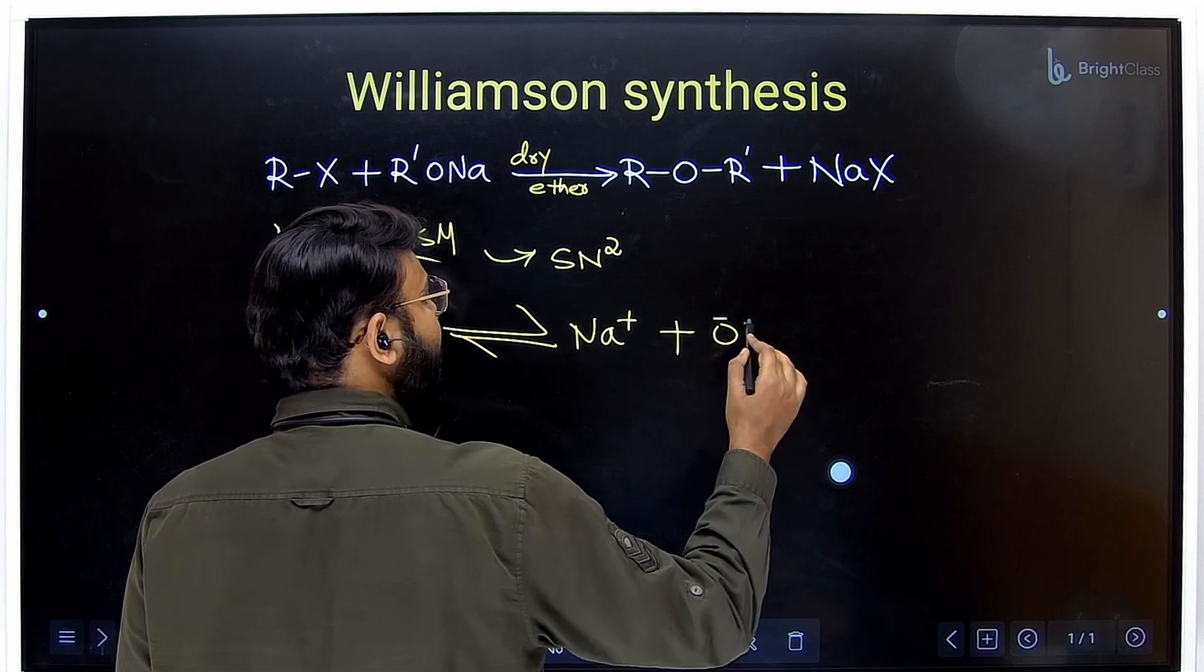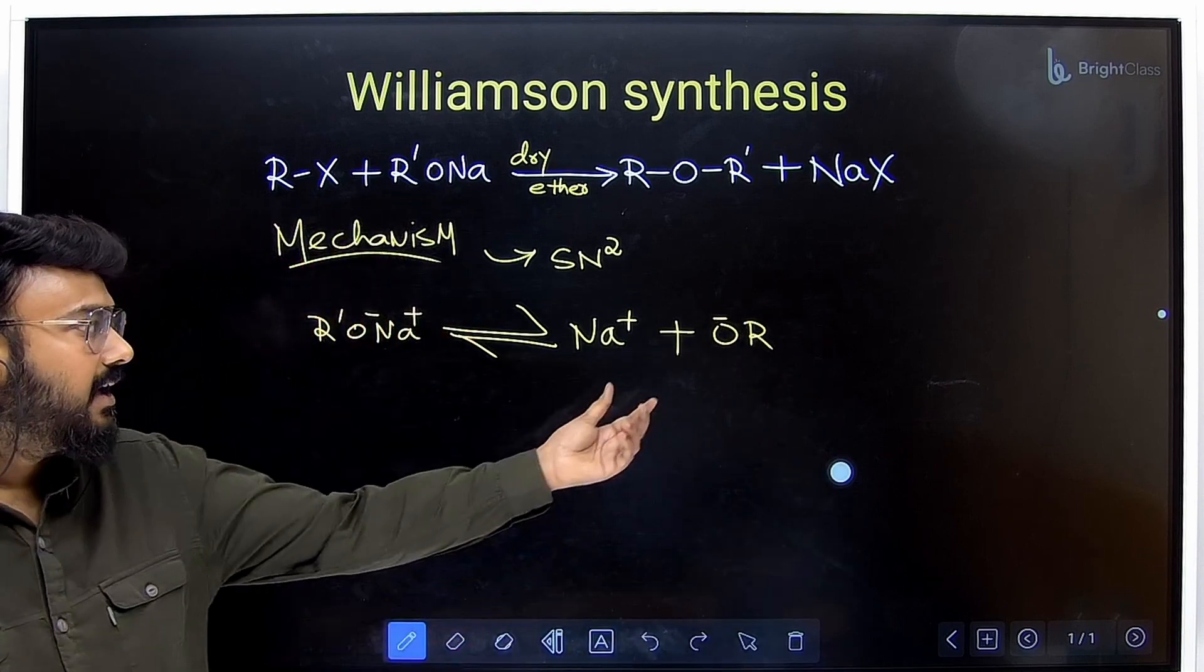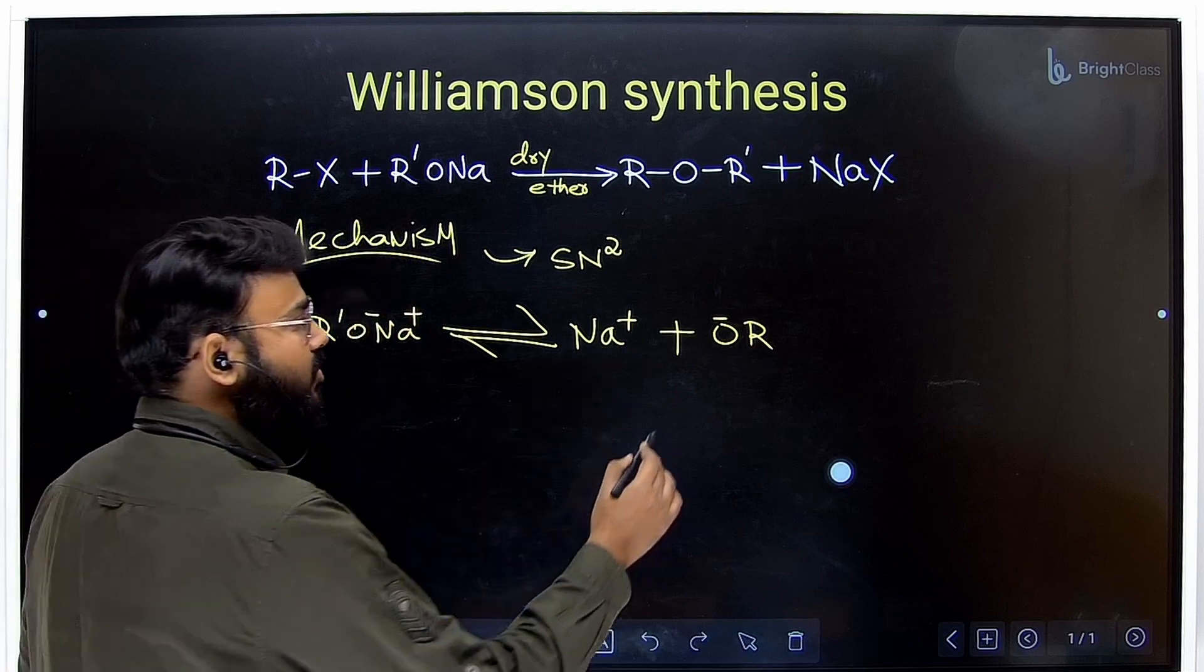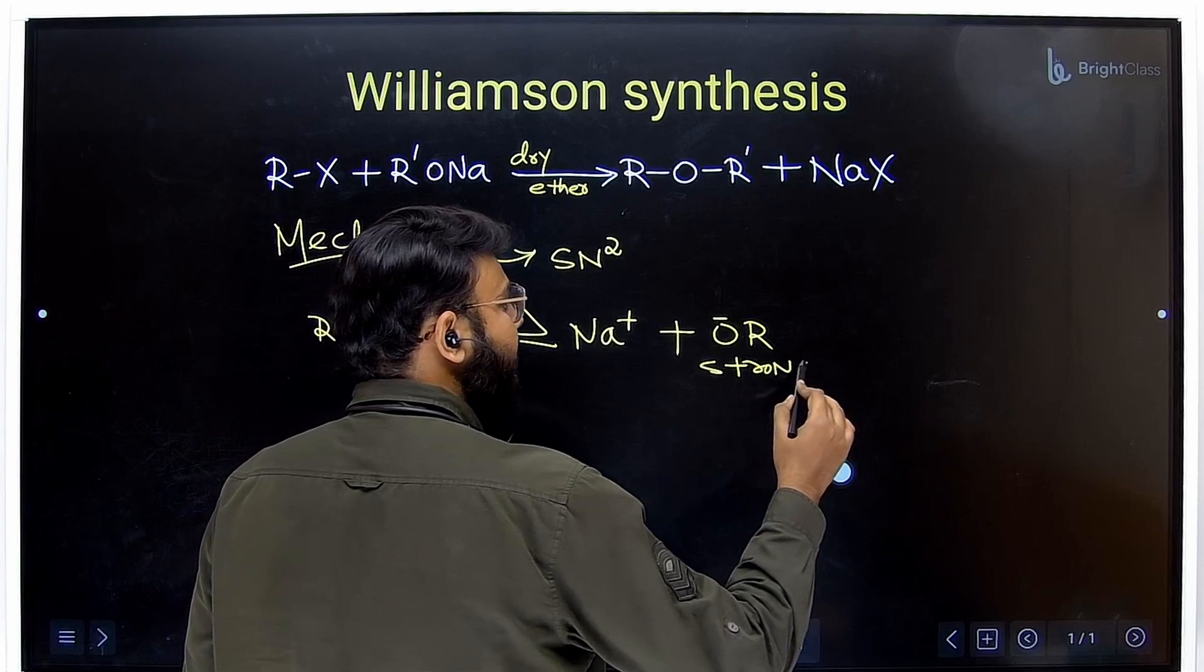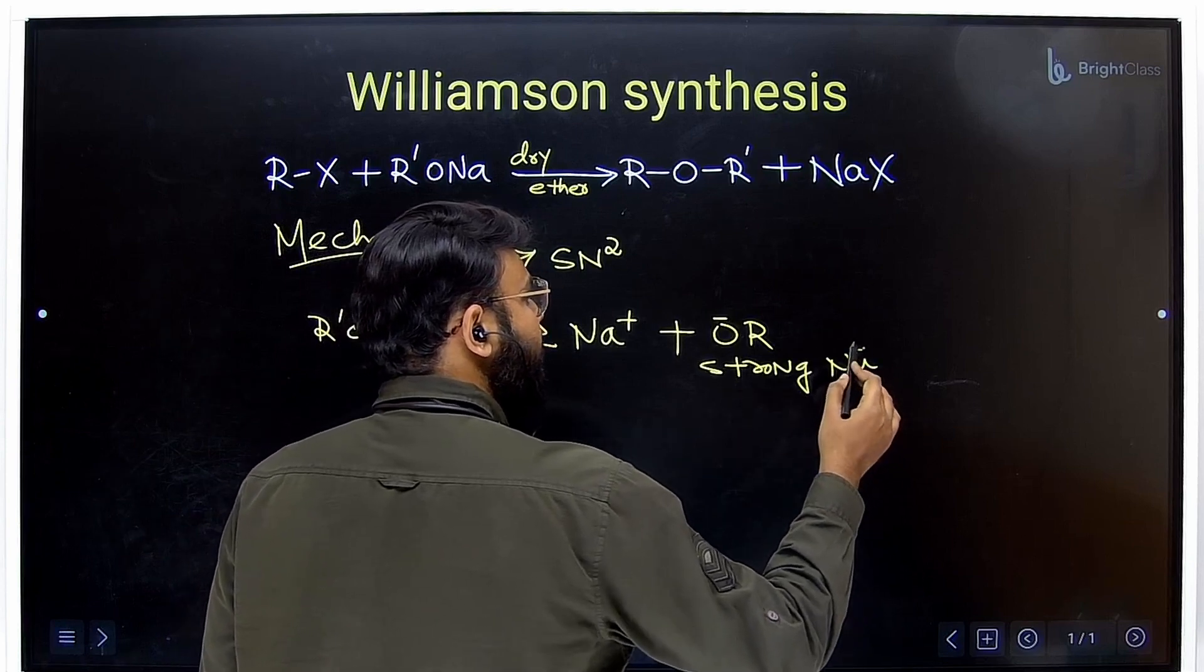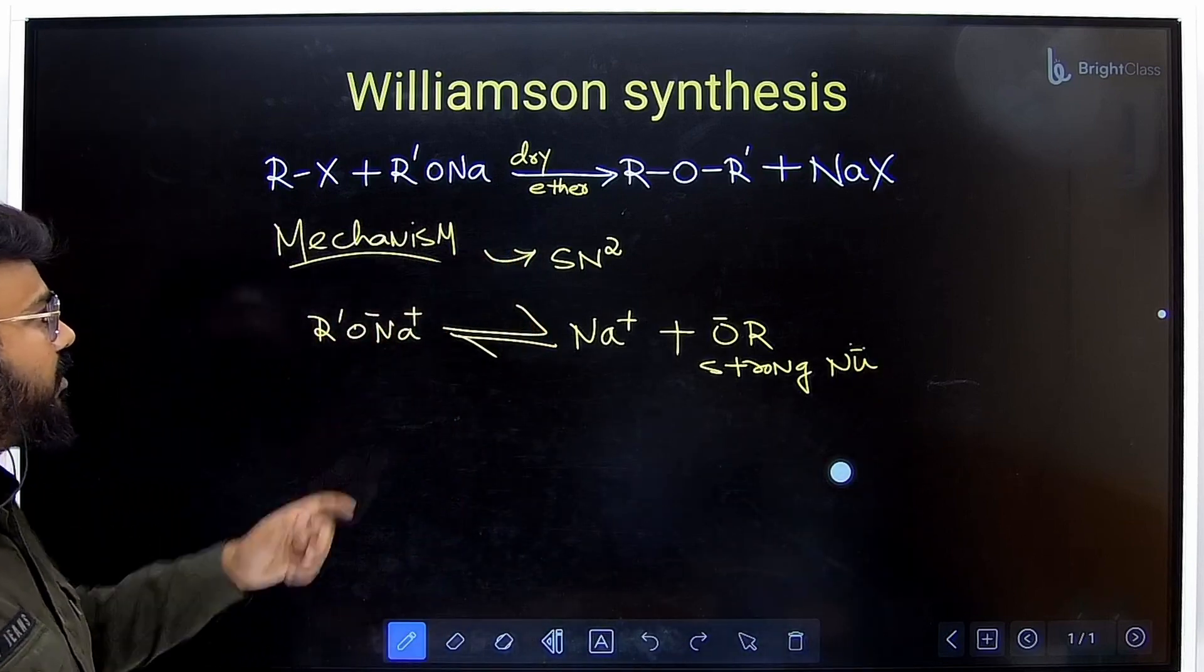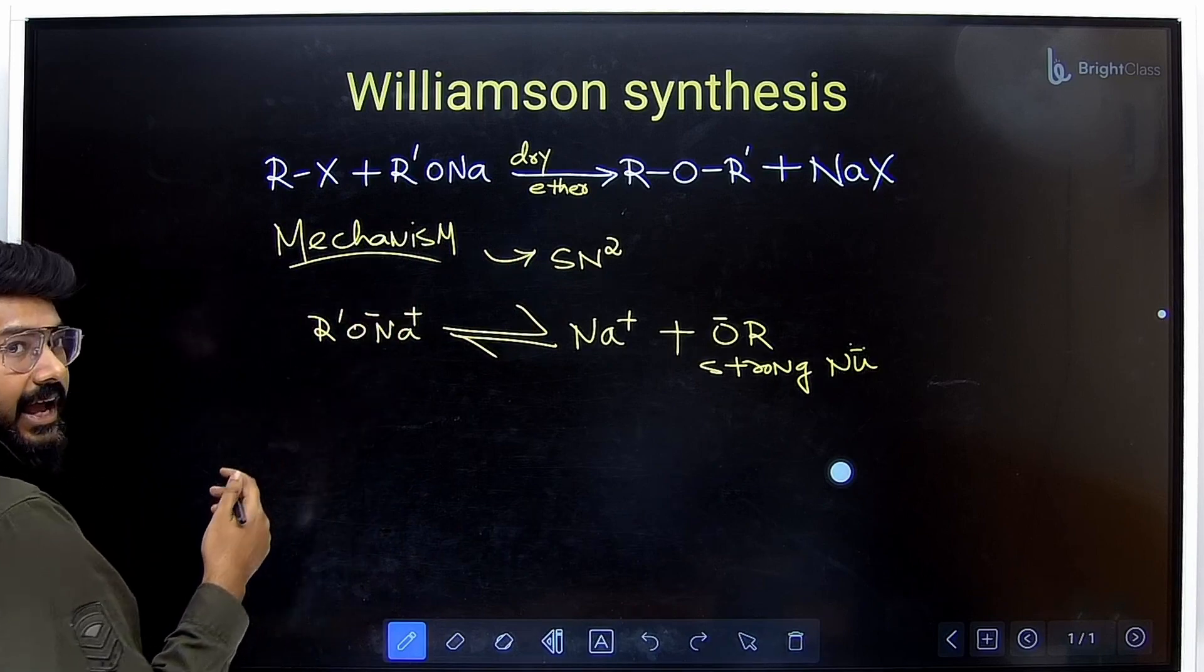We will be getting alkoxide ion and it is a very strong nucleophile. We know in SN2 reaction we take strong nucleophile. It is a strong nucleophile. Now this strong nucleophile will attack on the alkyl halide.